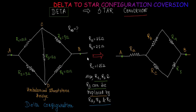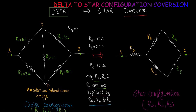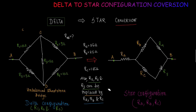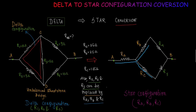On the left-hand side we have delta configuration in which R1, R2 and R3 are connected in the shape of delta between points A, C, D. On the right-hand side we have star configuration in which the resistances Ra, Rb, Rc are connected in the shape of a star between the points A, C, D, replacing R1, R2, R3.